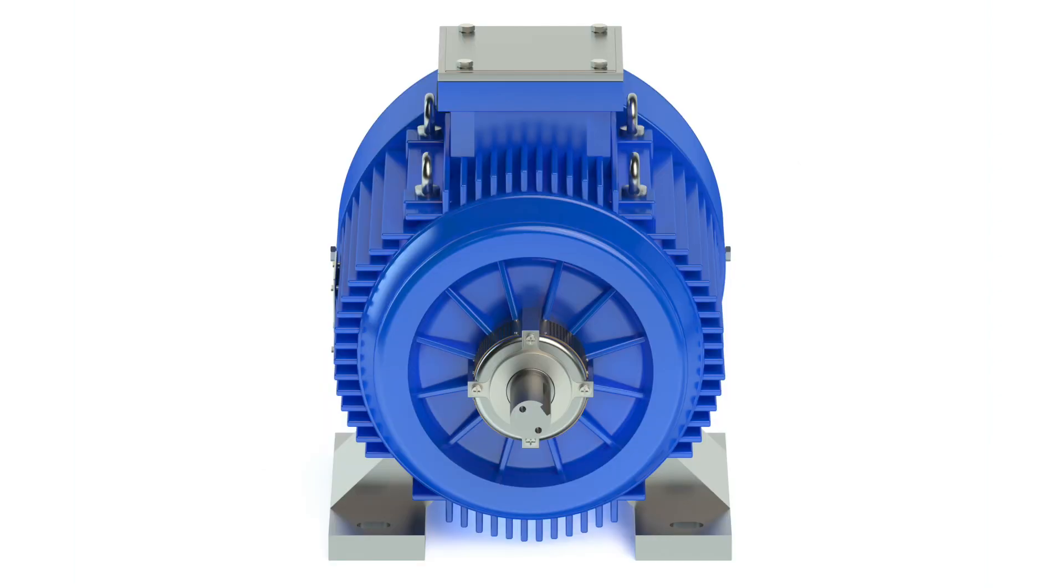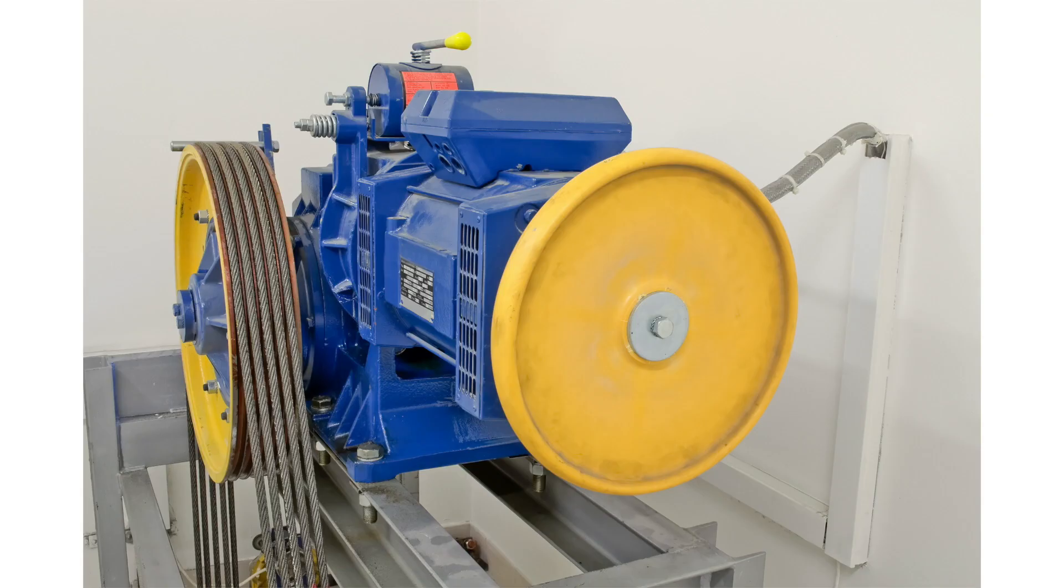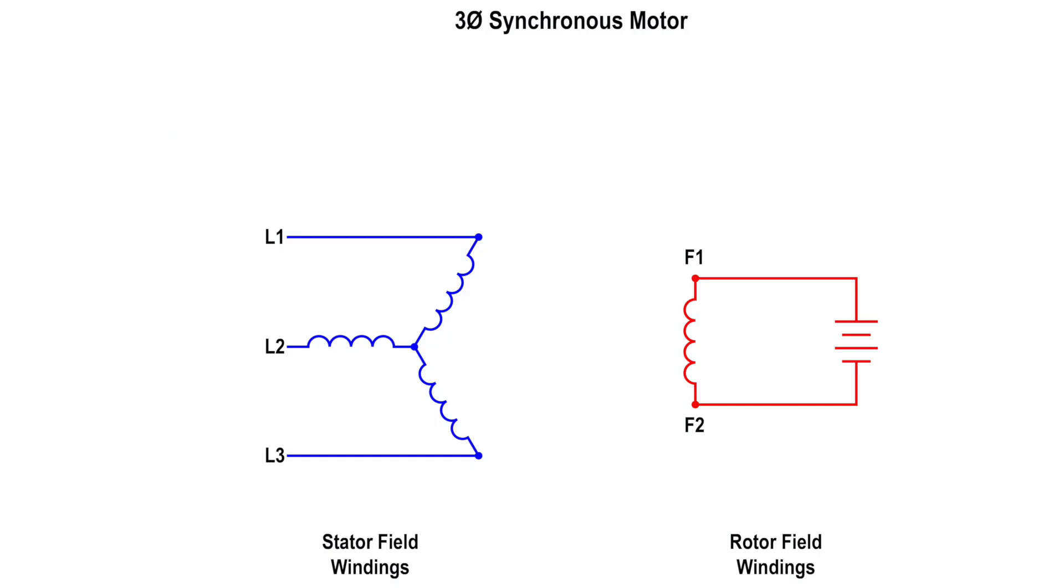The three-phase synchronous motor runs at a constant speed from no load to full load in synchrony with the line frequency. When a three-phase voltage is applied to the stator windings, a rotating magnetic field is produced. DC voltage is then applied to the rotor windings and a second magnetic field is produced.